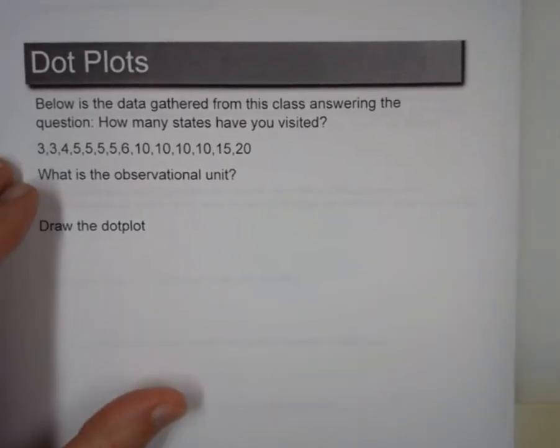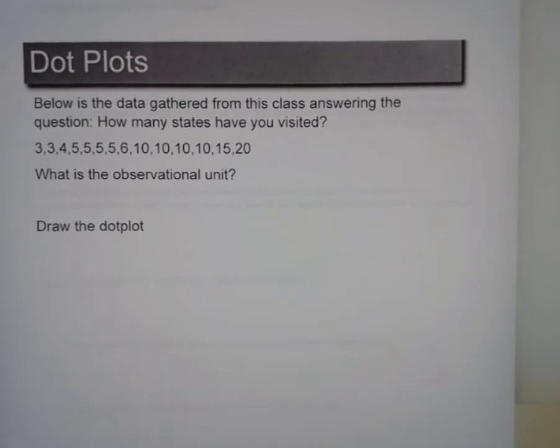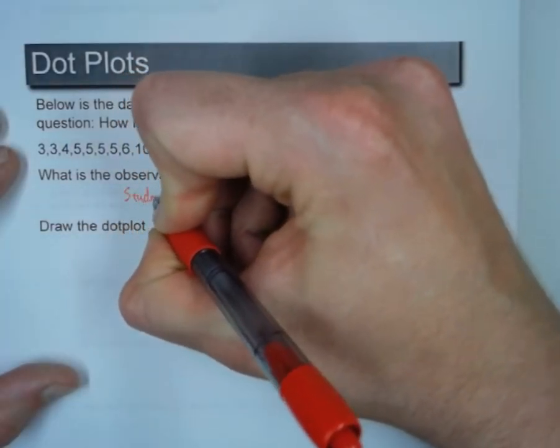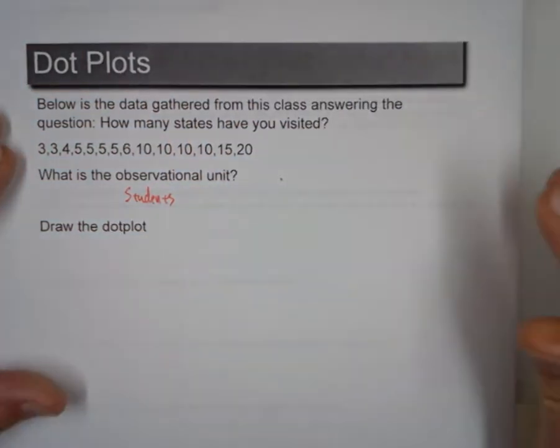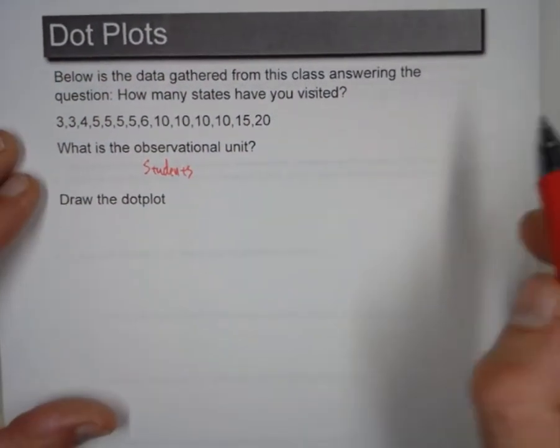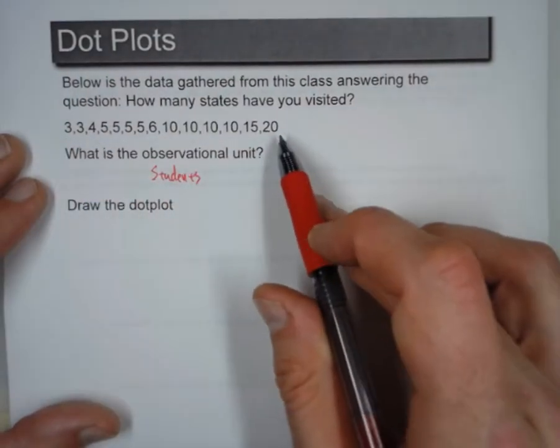Next one, below is data gathered from this class, answering the question, how many states have you visited? So what is the observational unit? Well, I gather these from my students, so that is the observational unit. So next, I want to draw this dot plot. So what's the lowest number? Three. What's the highest number? Twenty.